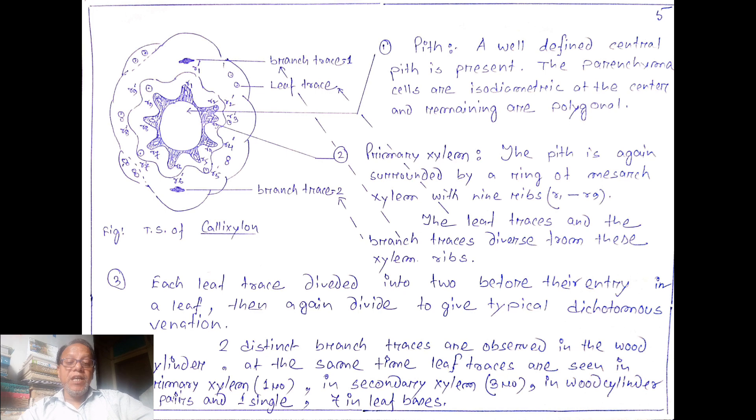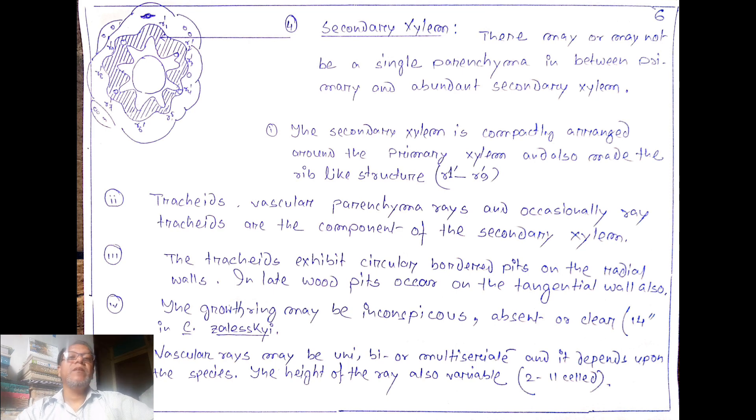Each leaf trace divides into two before their entry in a leaf and then again divides to give typical dichotomous venation. Two distinct branch traces are observed in the wood cylinder. At the same time leaf traces are seen in primary xylem, secondary xylem, wood cylinder, and in the leaf bases.